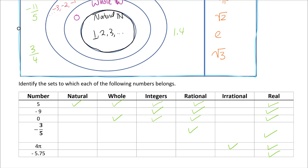The last example is a decimal that stops, so it is rational because it can be written as a fraction, and real. That concludes this part on number systems.